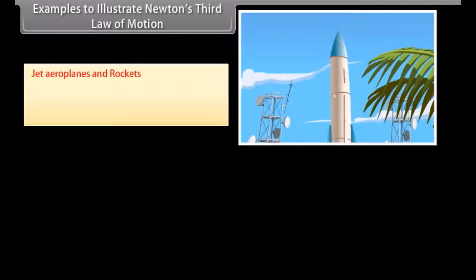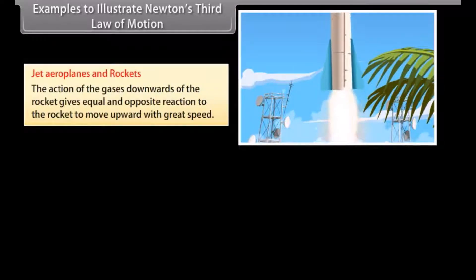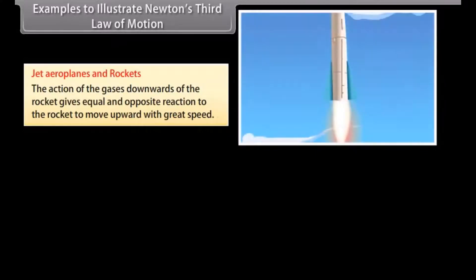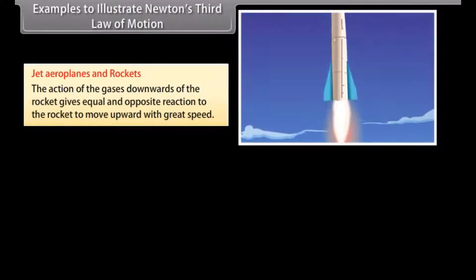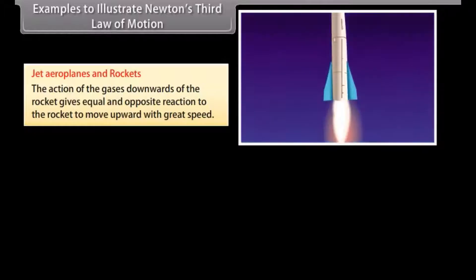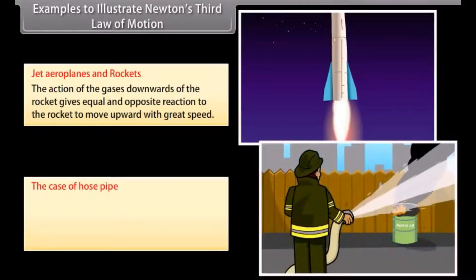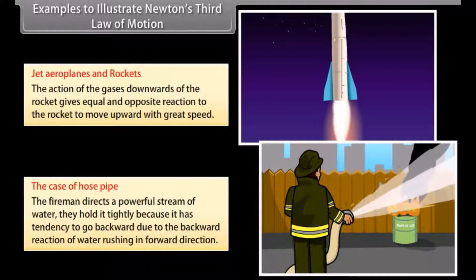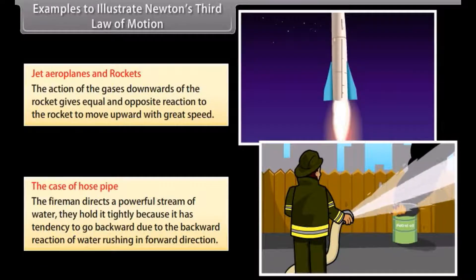Jet aeroplanes and rockets: the action of the gases downwards of the rocket gives equal and opposite reaction to the rocket to move upward with great speed. The case of hose pipe: the fireman directs a powerful stream of water. They hold it tightly because it has tendency to go backward due to the backward reaction of water rushing in forward direction.